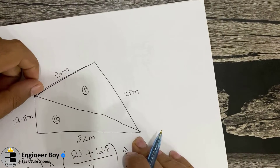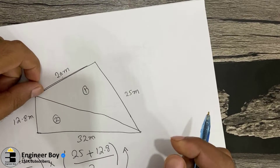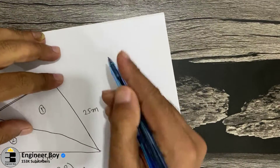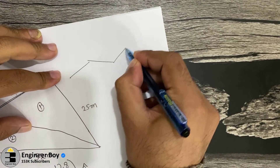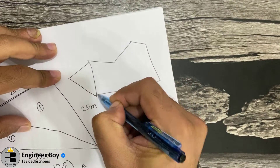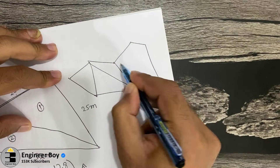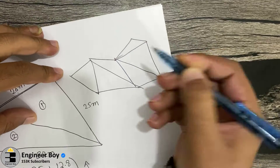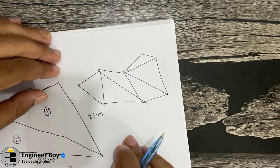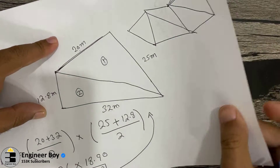What I actually use is Hero's formula. I split the diagram into two triangles — it doesn't matter if you have any other irregular shape, you can just split it into triangles, determine the area of each triangle, add them up, and you're done.